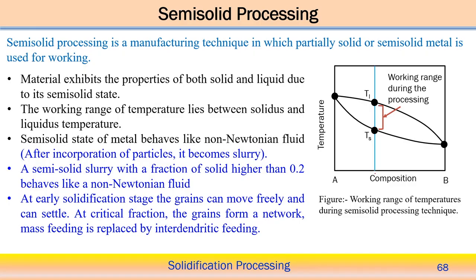Between the solidus and liquidus temperature at one particular composition, we process the semi-solid metal to create critical values of solidified fraction in the mushy zone. After that, we perform mechanical shearing of the partially solidified component over the liquid such that we can represent the complete component as a slurry. This semi-solid material exhibits both solid and liquid state properties.